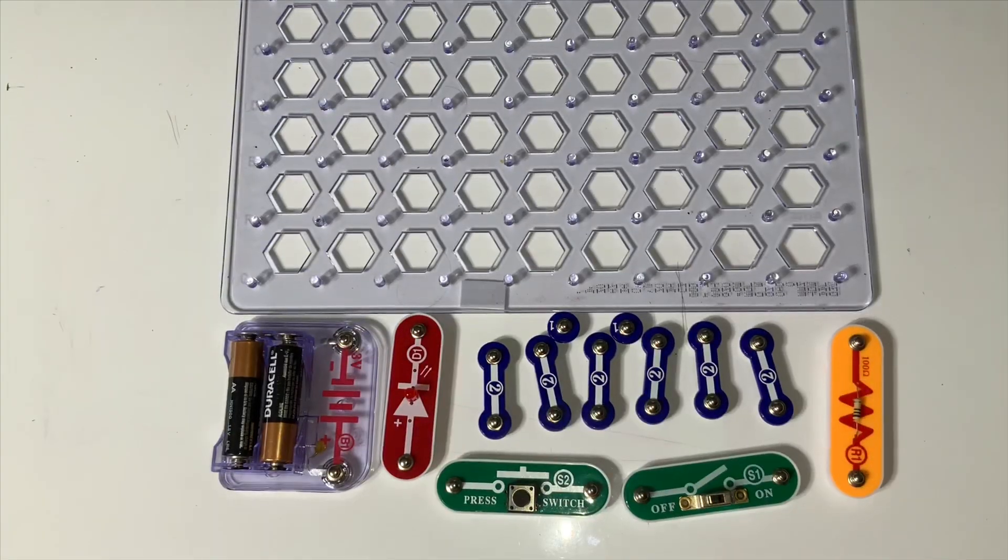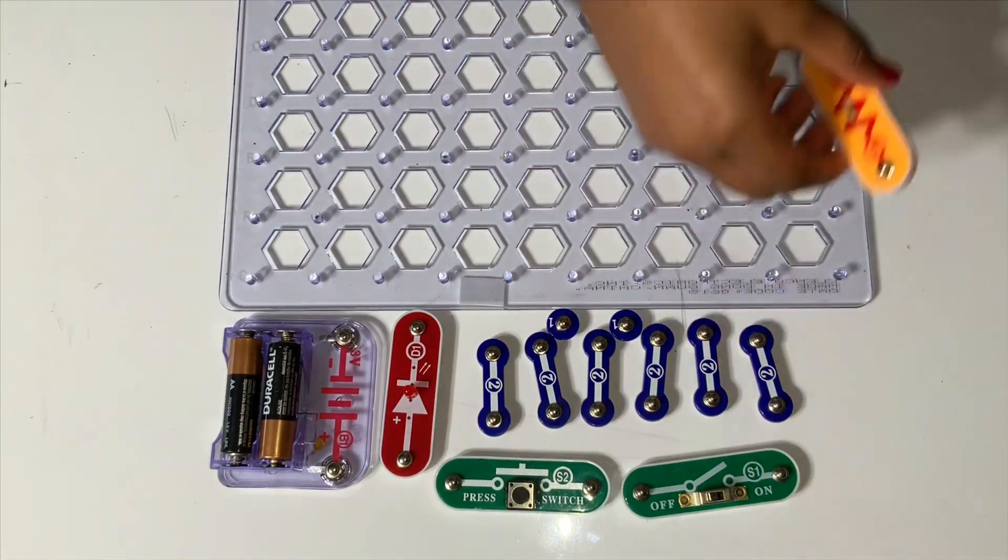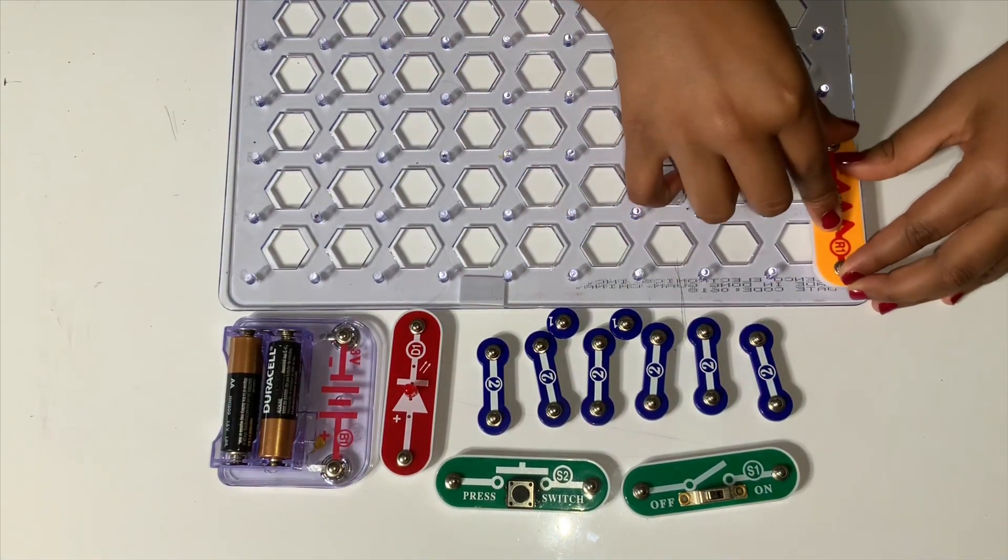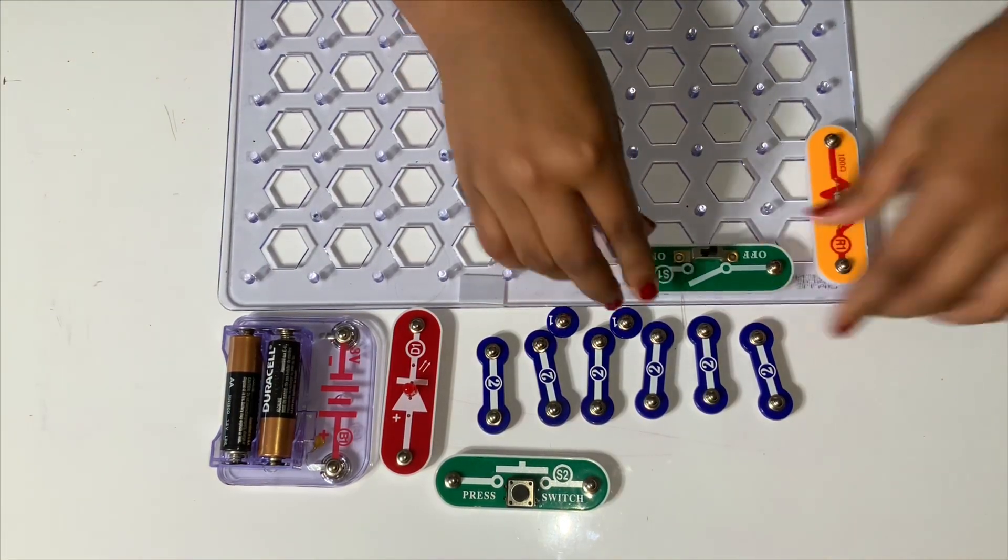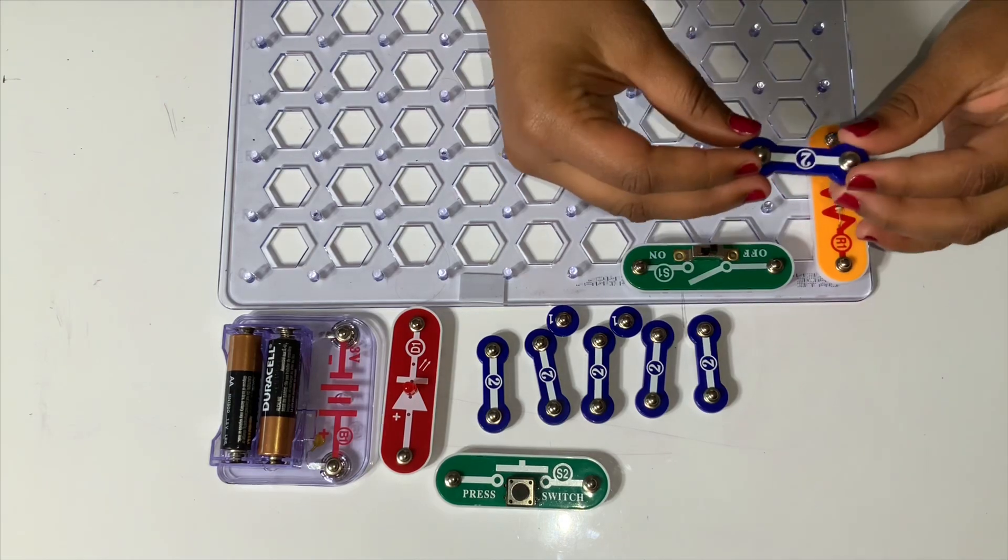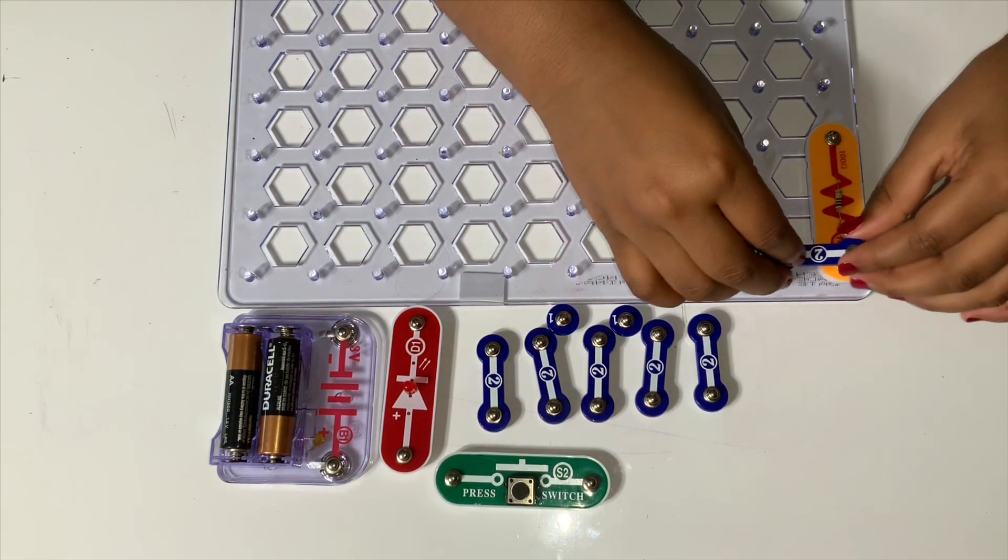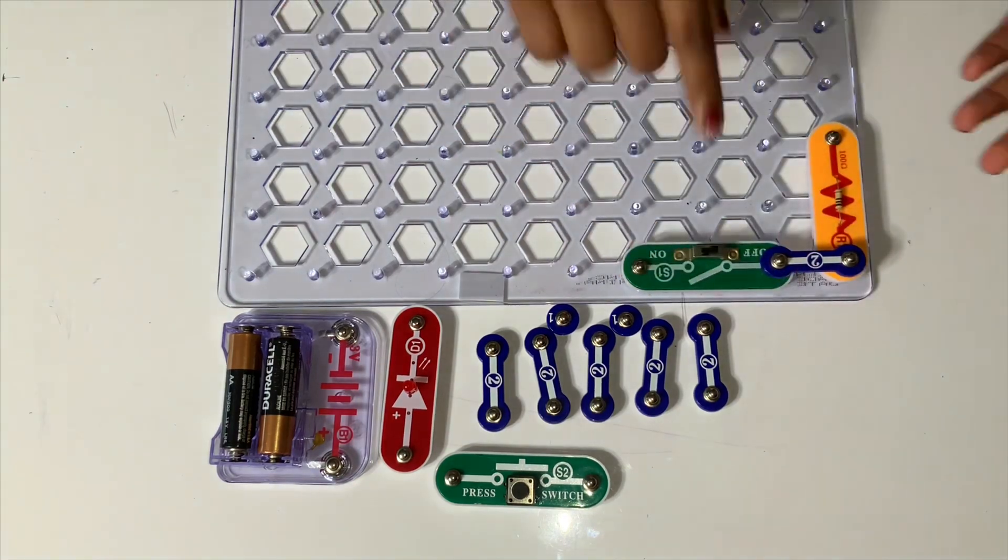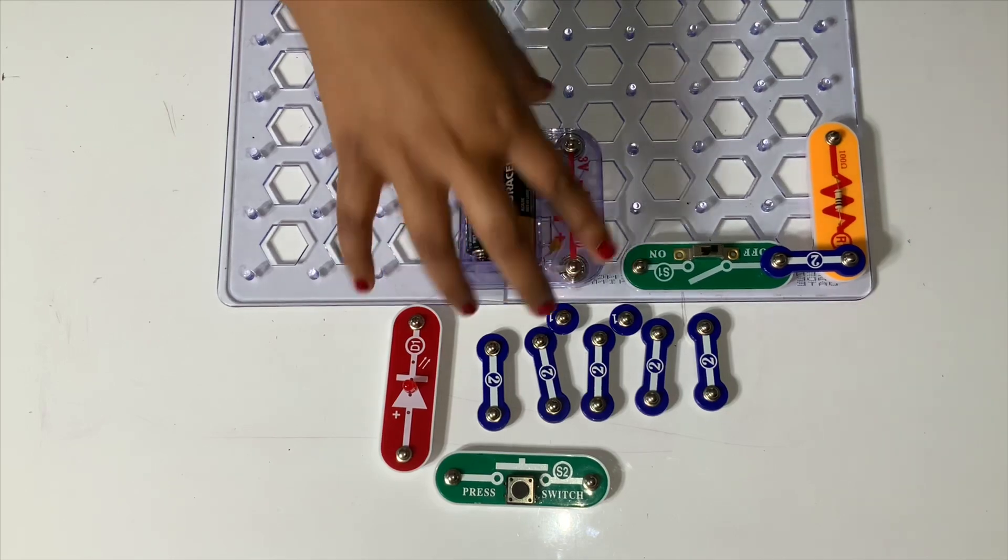Let's get started with our this and that project. First we're going to need the resistor and place it right over here. Next to that, place the slide switch right over here. After that, place the two snap wire right in front of those two like this. Now, place the battery holder right over here like this.